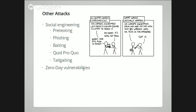Quid pro quo is a form of social engineering where you give someone something and then they give you something. There was a study where average people in a subway station were asked whether they would trade their password for a chocolate bar, and something like 70-some percent said yes. A disturbing percentage gave out their password even before they were given the chocolate bar. Don't try this — it's bad, it's illegal, it's misuse of computer systems. But don't assume your users are going to be smart.